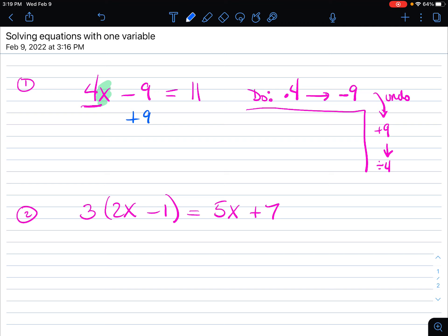So the first step says, add 9 to both sides. Now make sure it's both sides of the equation. This cancels. So now we're left with 4x equals 20.